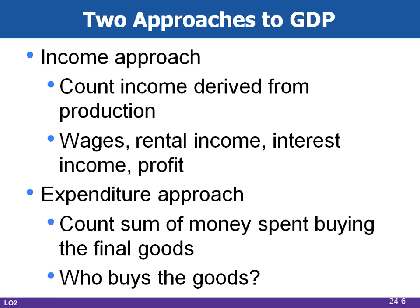GDP can be viewed from two different perspectives. The income approach looks at GDP in terms of the income derived or created from producing goods and services. The expenditures approach measures GDP as the sum of all the money spent in buying the output. In theory, either method should yield equal results — they're two different ways of looking at the same thing, like looking at a coin from the head side or the tail side.